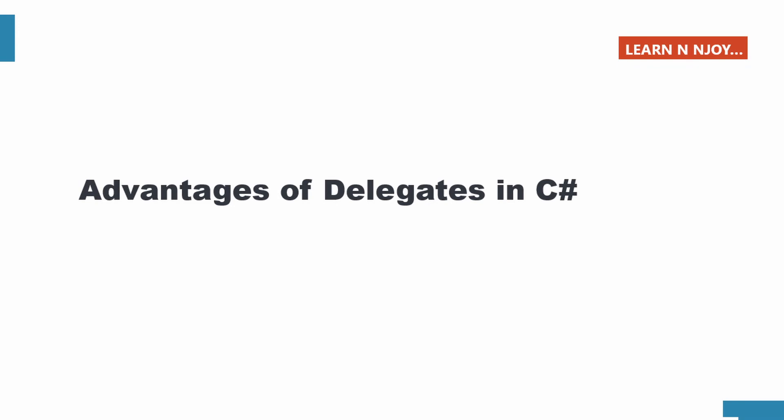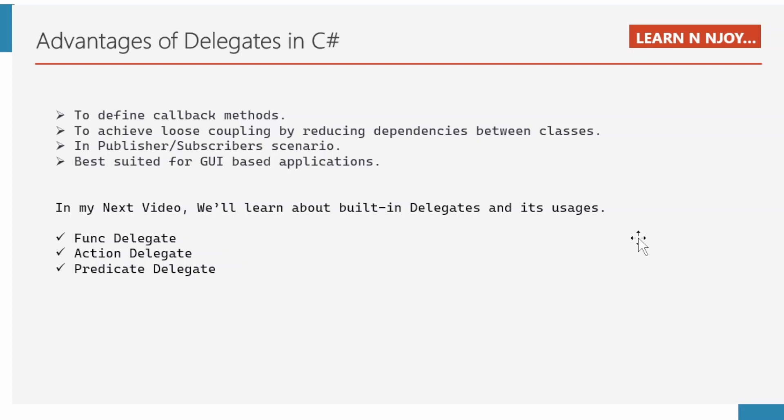Advantages of delegates in C#: As we have seen with examples, the main advantages are — first, we can take advantage of delegates for defining callback methods; second, we can use delegates to achieve loose coupling by reducing dependencies between classes; third, publisher-subscriber is the best scenario where we can get huge benefit from using delegates; and fourth, it is best suited for GUI-based applications. That brings me to the end of this session. We looked at what delegates are, how to implement them with a real-time example, and the advantages of using them.